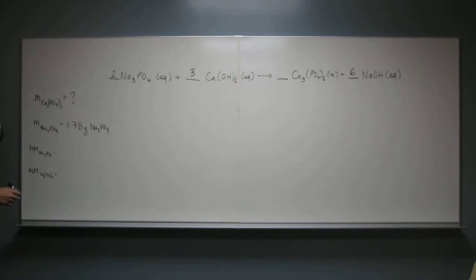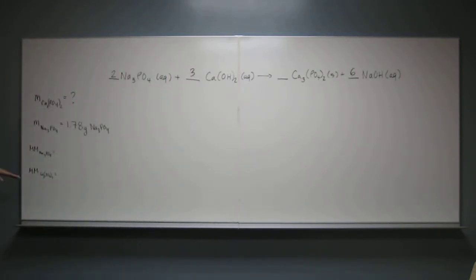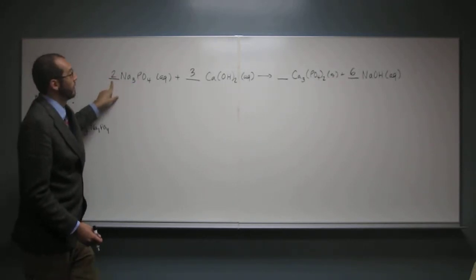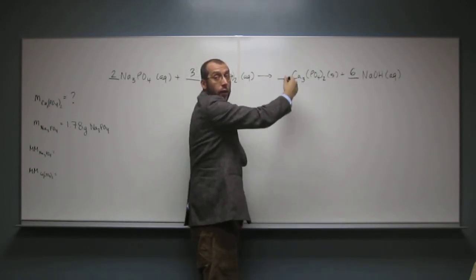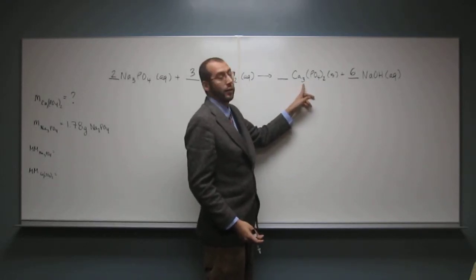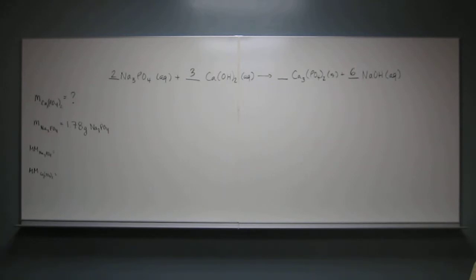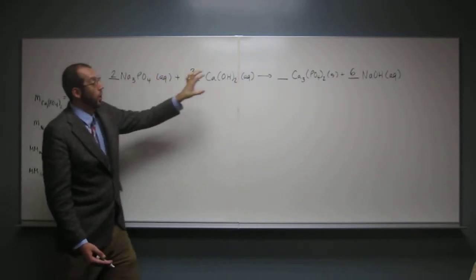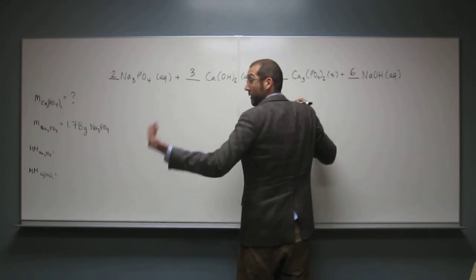Now the next thing we need to do is use the balanced equation to get the mole-to-mole ratio of sodium phosphate and calcium phosphate. The mole ratio comes from the coefficients. We have two moles of sodium phosphate for every one mole of calcium phosphate — there's an implied one coefficient in front of calcium phosphate. The three in the formula tells you how many calciums there are, not the moles of the whole compound. So we have a two-to-one mole ratio, and that's going to be our conversion factor.